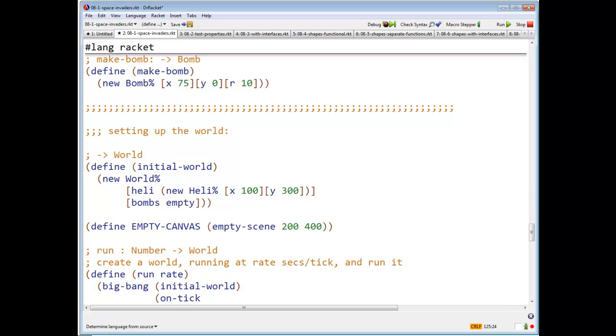And last but not least, we need to actually get this thing going. So I'm going to have a function called initial world. It's a function of no arguments in hash lang racket. And initial world, when applied to no arguments, produces a new world where heli is a new helicopter and the list of BOMs is empty.